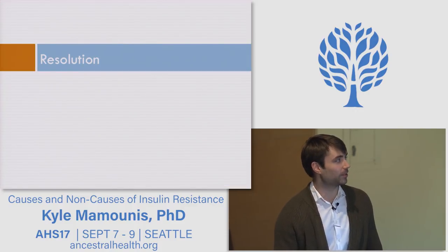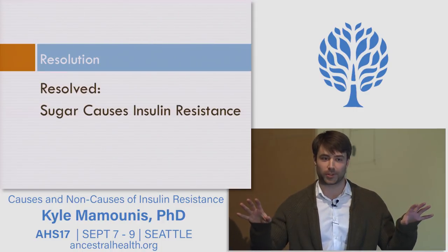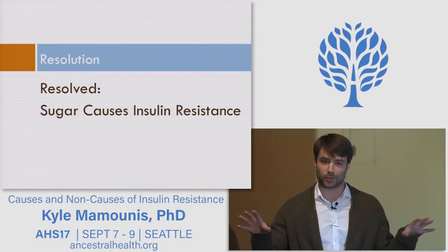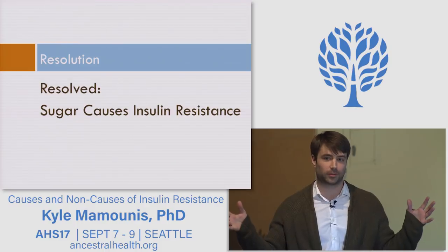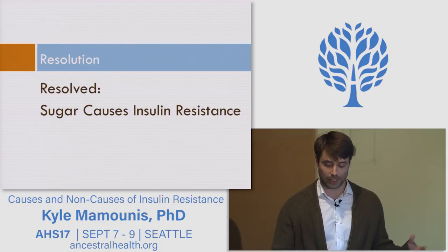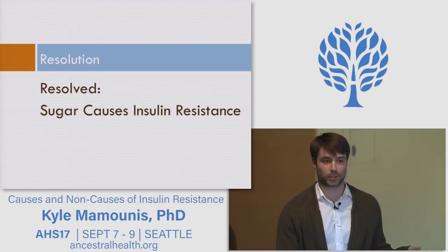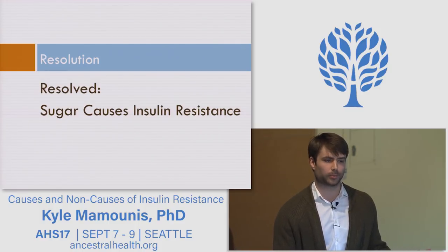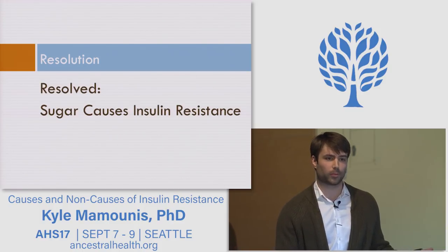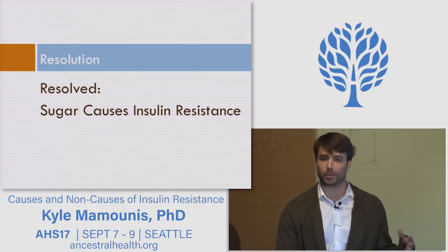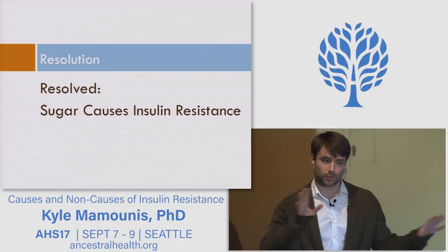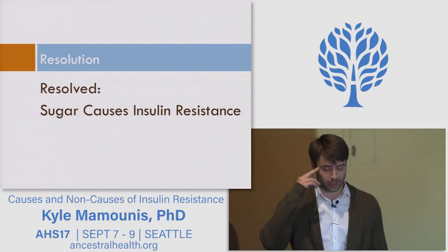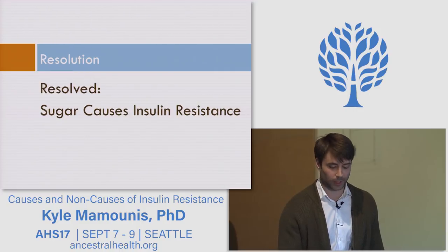The resolution is: resolved, sugar causes insulin resistance. Don't be too picky with the semantics — sugar, sucrose, fructose, maybe even glucose and lactose. And insulin resistance covers everything from molecular biology to type 2 diabetes and metabolic syndrome — that's the loose resolution as I'd like it defined. So make a mental note of how you feel about that resolution, and we'll go from there.